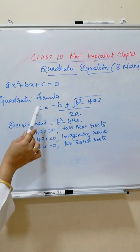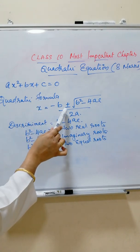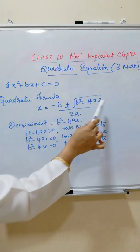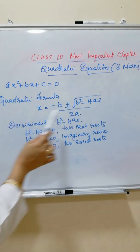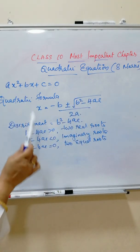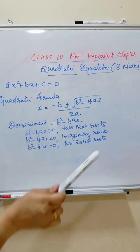Quadratic formula is x is equal to minus b plus or minus square root of b square minus 4ac divided by 2a. What is b square minus 4ac? b square minus 4ac is called the discriminant.